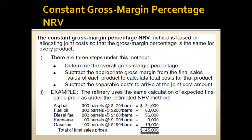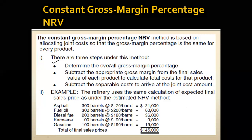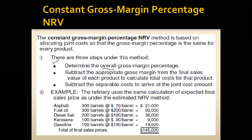Here are the three steps needed to allocate joint cost using this method. In the first step, we have to calculate the overall gross margin — meaning the total gross margin for all products combined, not for a single product. In the second step, we will use this equation: sales equals cost plus gross margin. We subtract the appropriate gross margin from the final sales value of each product to calculate the total cost for that product.